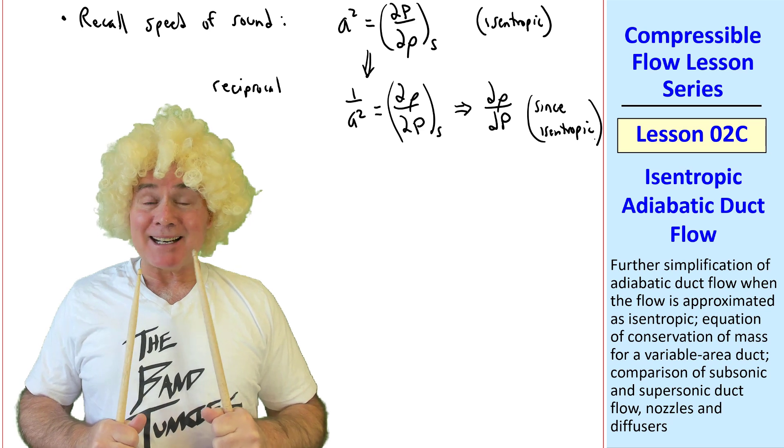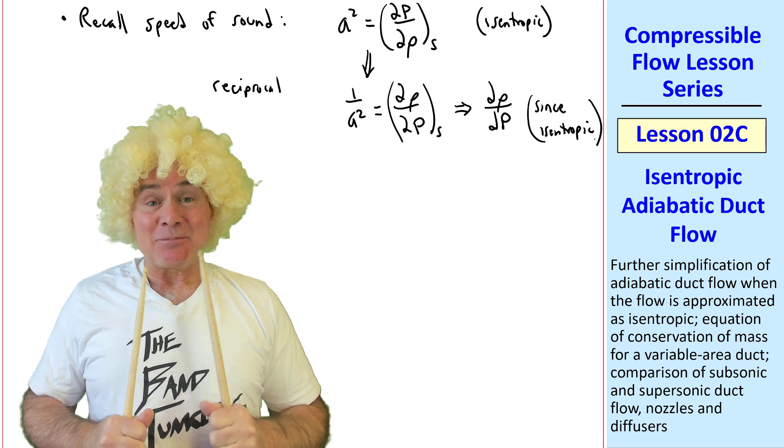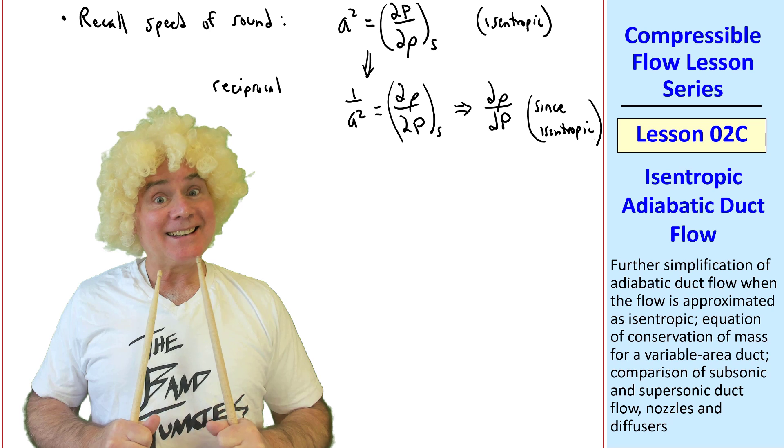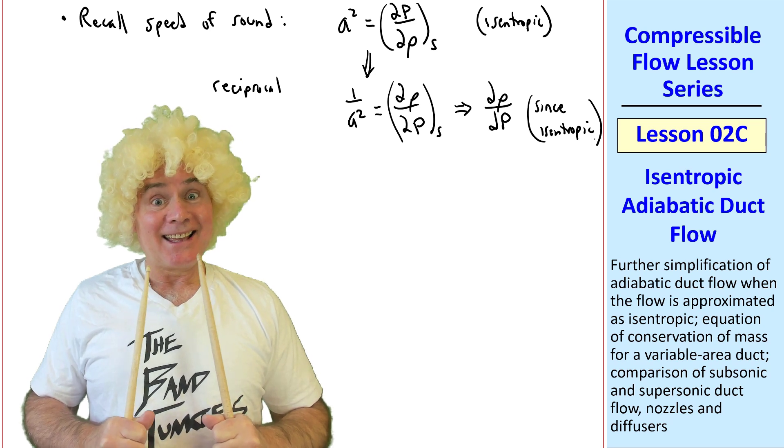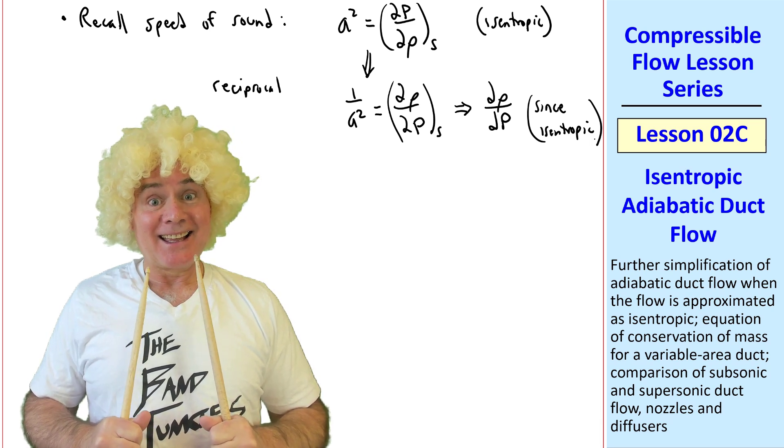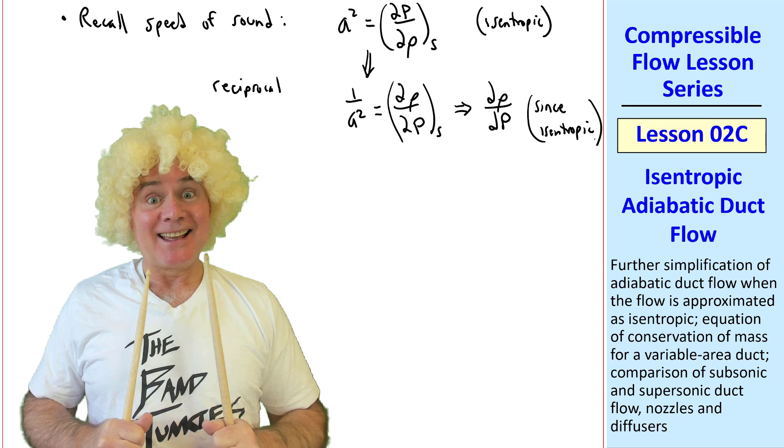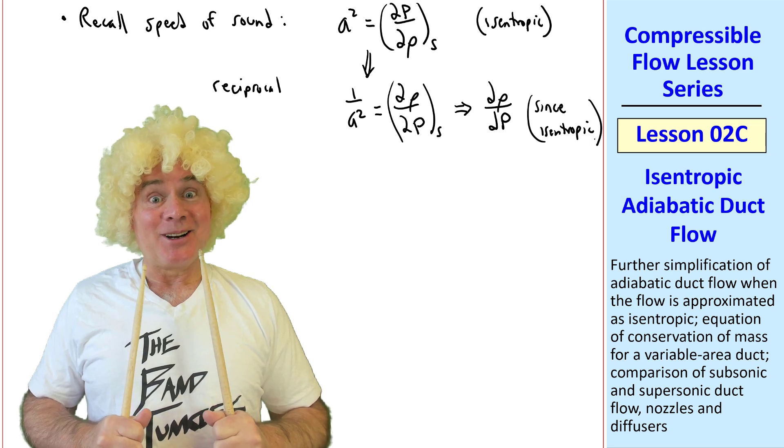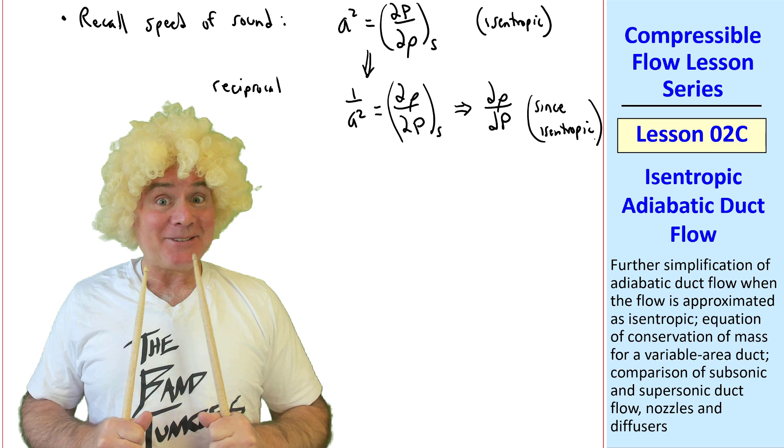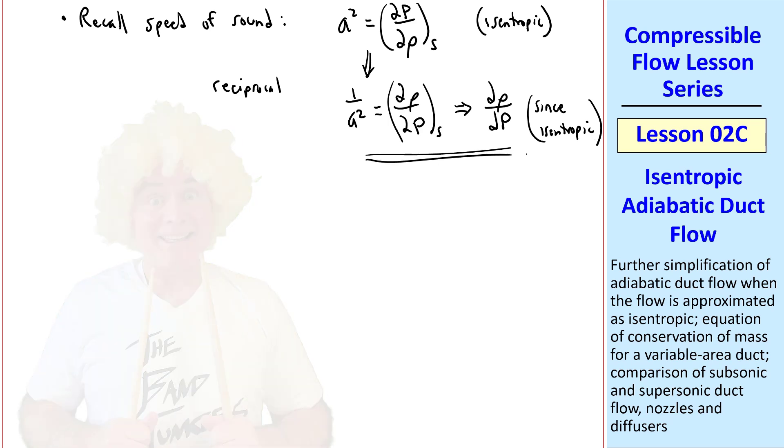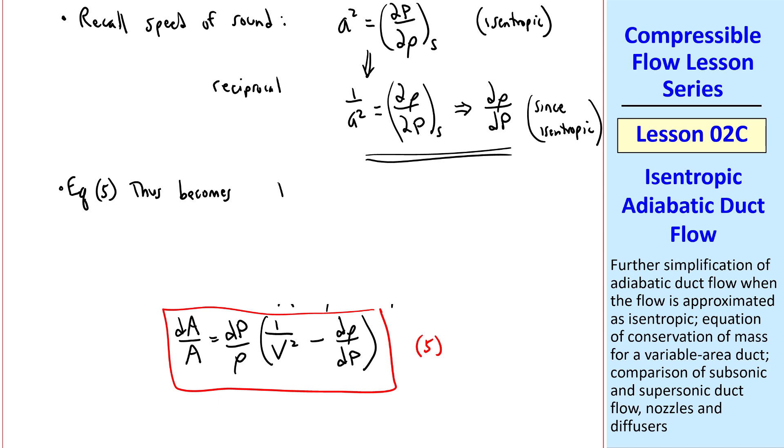Sir, is it mathematically proper to take the reciprocal of a derivative like that? Yes, BJ, it is mathematically proper, and I think I'll give this as a homework problem. You'll have to prove that it works. Oh, well, thank you anyway. With this expression for dP over rho, equation 5 thus becomes dA over A equal dP over rho times 1 over V squared minus 1 over A squared.